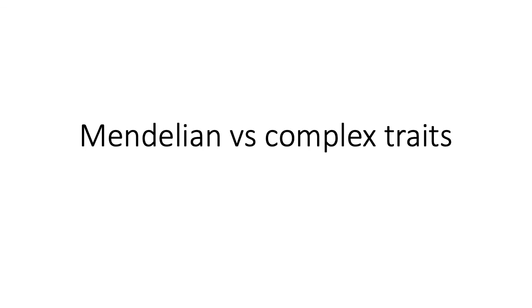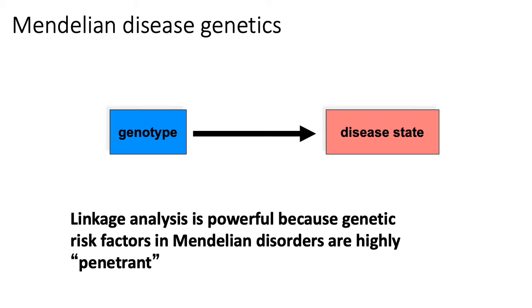I want to take a few minutes to discuss the difference between Mendelian disorders versus complex diseases or traits. Linkage analysis historically has been really prevalent in part because linkage analysis is pretty good at finding genetic causes of Mendelian disorders. A Mendelian disorder is generally speaking a disorder that is driven by single mutations in a single gene.